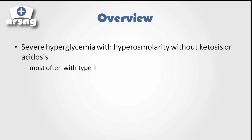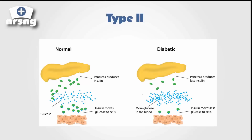HHNS is most often going to occur in type 2 diabetics. Generally these are patients that know they're diabetic, and what can happen is they can go into this HHNS state as blood sugars begin to rise. With type 2 diabetics, the body becomes resistant to the insulin that's being produced. So we're still producing insulin, but we end up with more glucose in the blood, and we're not getting that glucose into the cell.